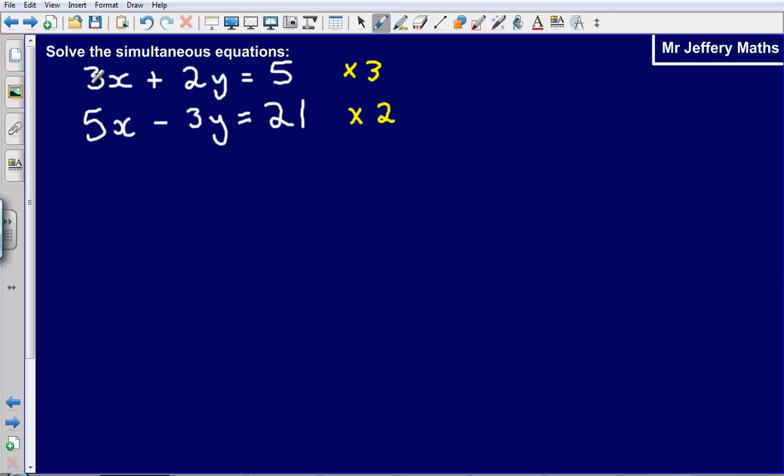So let's see what happens. 3x plus 2y equals 5 so I need to multiply all parts by 3. So what I end up with is 9x plus 6y equals 15.